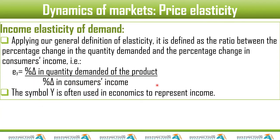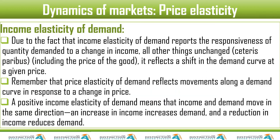For example, if income went up from 10,000 to 12,000, what percent did it go up, and what happens to quantity demanded for that product? The symbol Y is used by economists to represent income. Income Elasticity of Demand reports the responsiveness of quantity demanded to a change in income, with all other things unchanged — ceteris paribus, including the price of the good. The price of powdered milk and fresh milk remains the same; the only thing that has changed is income. It reflects a shift in the demand curve at a given price, unlike price elasticity which reflects movements along a demand curve.